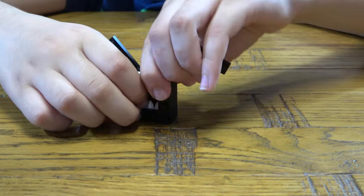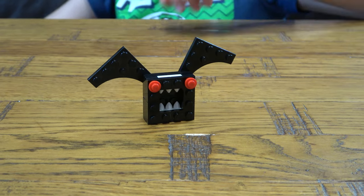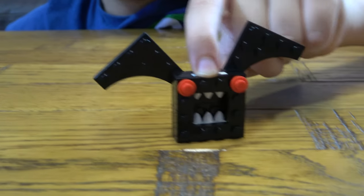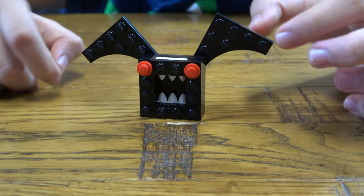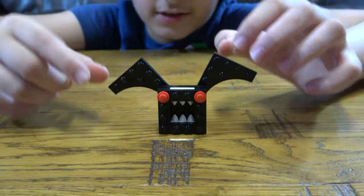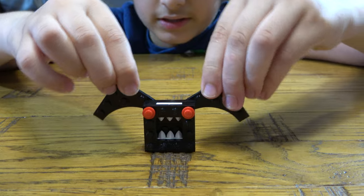Yeah, so here's the finished thing. Here is the vampire bat. As you can see, you can slightly move the wings.